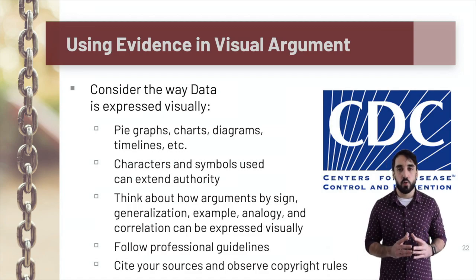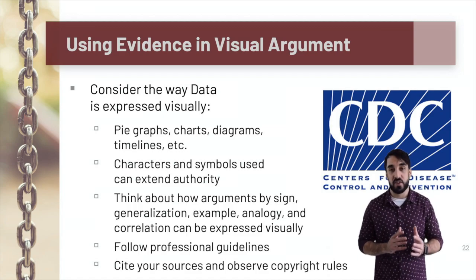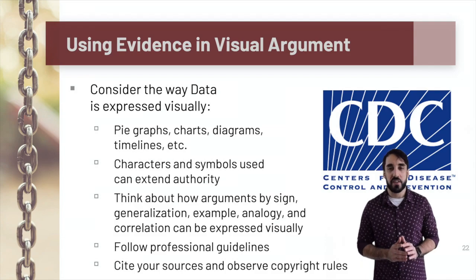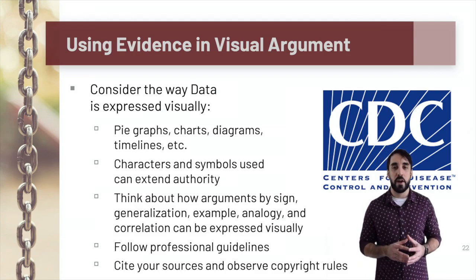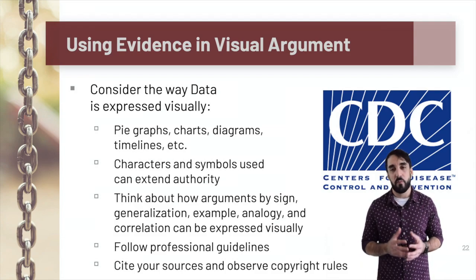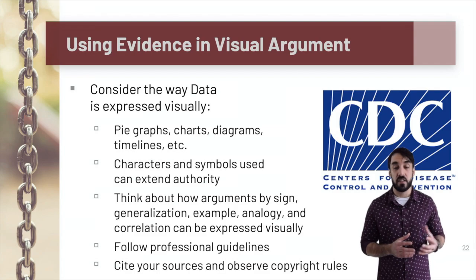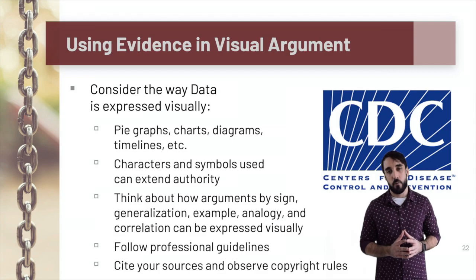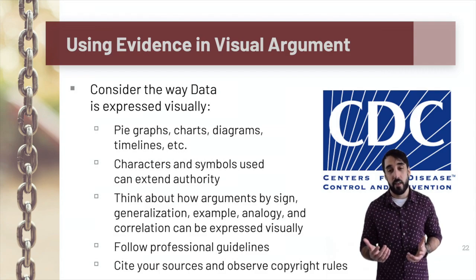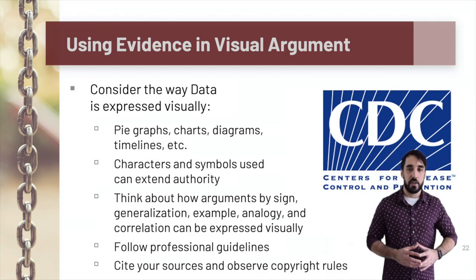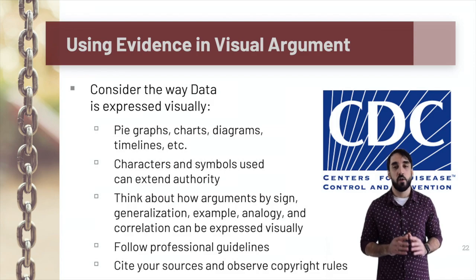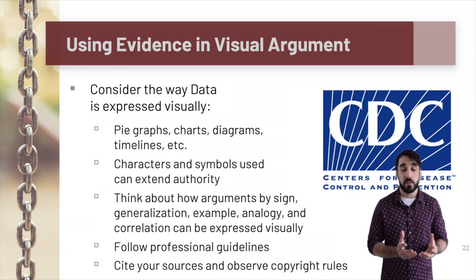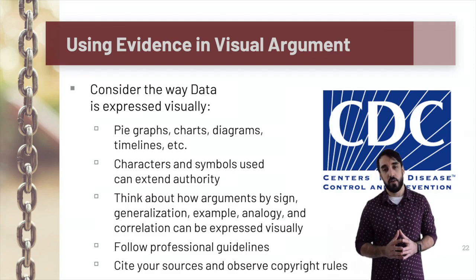As we think about how visual media and messages ask audiences to make particular inferences, we should think about how they require us to reason from forms previously discussed, like the deductive forms of reasoning — causal generalization or reasoning from sign — and those inductive forms like the argument by analogy, example, or correlation. And as we're creating our own visual media and messages, we should be sure to cite our sources and observe copyright rules and regulations.